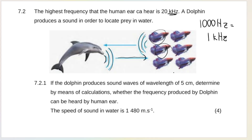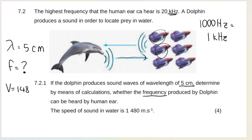The dolphin produces sound waves with a wavelength of 5 centimeters. You should convert wavelengths to meters. Determine by calculation whether the frequency produced by the dolphin can be heard by the human ear. The speed of sound in water is 1,480 meters per second. You need to know that wavelength is represented by lambda (λ), and that you need to convert 5 centimeters to meters. We're looking for frequency F.